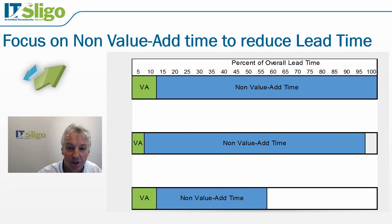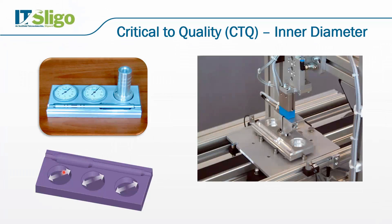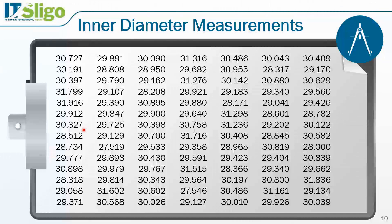Moving on to some quality measurements — having looked at lean measurements, we've decided that the key critical to quality metric is the inner diameter. There are other CTQ parameters, but this is the key one. We've had complaints that the dies are falling out, or the hole is too small so parts won't fit in. So we started measuring and collected 200 inner diameter measurements as a sample. The big question is: what are we going to do with all this data?